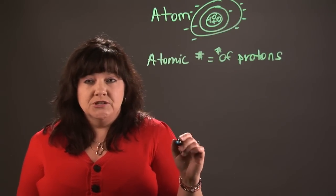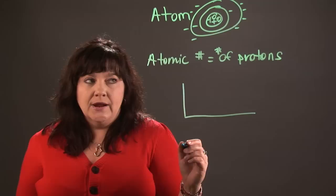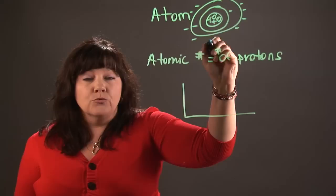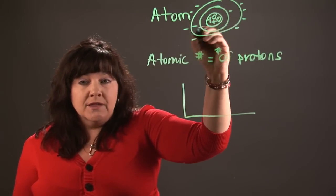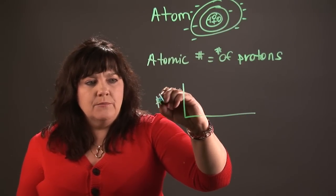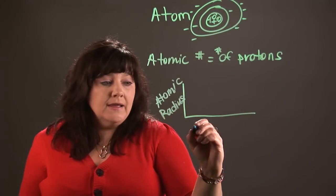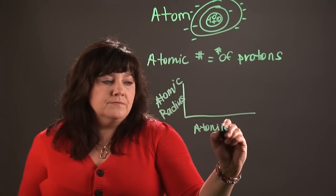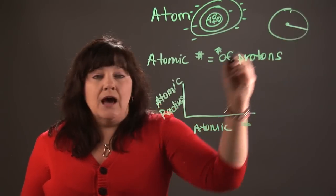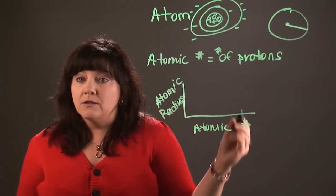There are actually two different relationships we're going to look at when we graph, and two different ways the graph would look. First, let's talk about what happens to the atomic radii as we go down the periodic table, because as we go down we're adding a ring every time. Level one has only one ring of the electron cloud, whereas level seven has seven levels. So we're going to graph the atomic radii, or radius, by the atomic number. Remember, the radius is the distance from the center to the outside of a circle, so the atomic radius is the distance from the center of the nucleus to the outside of the electron cloud.